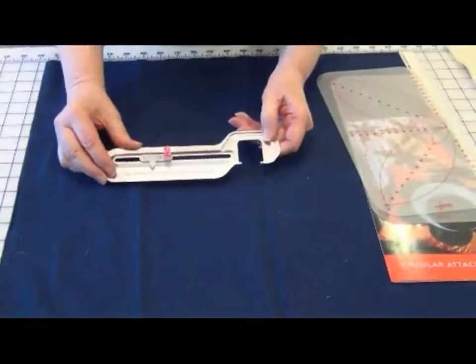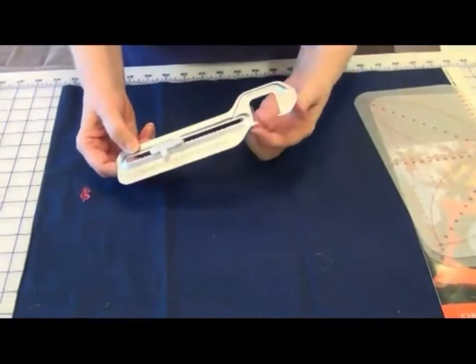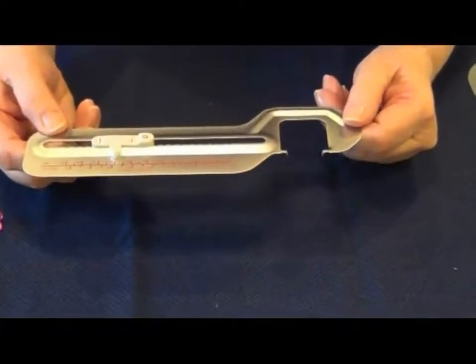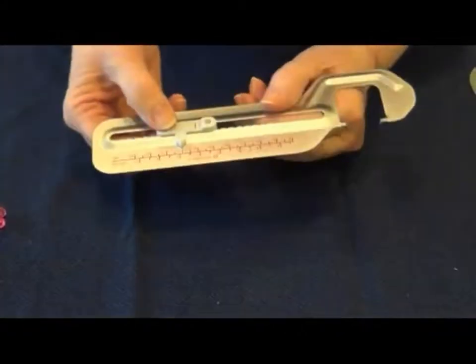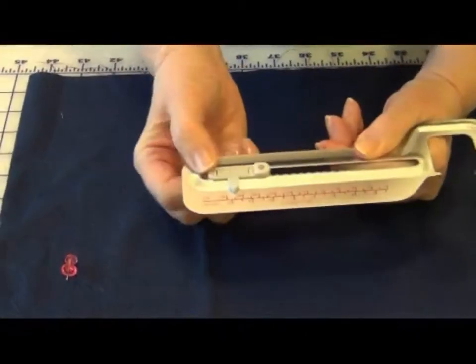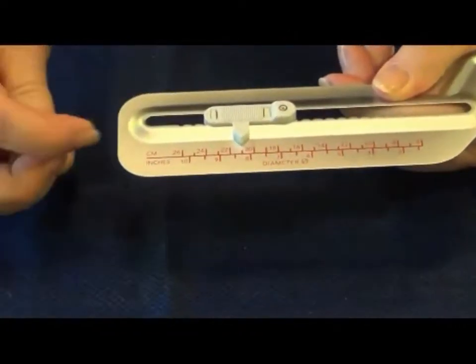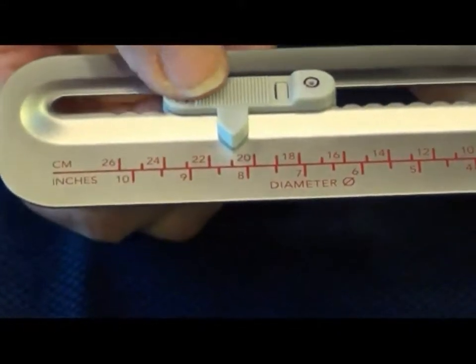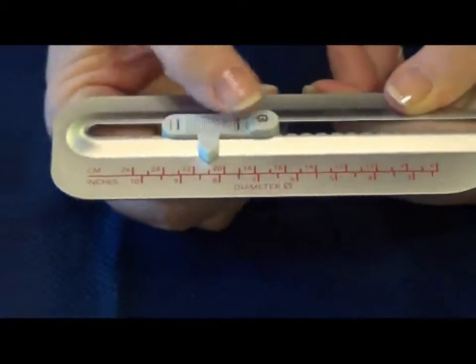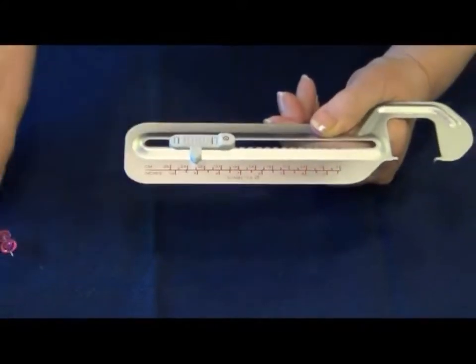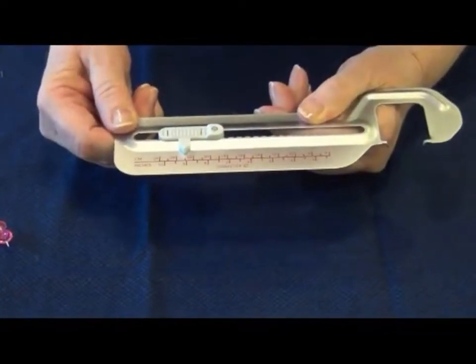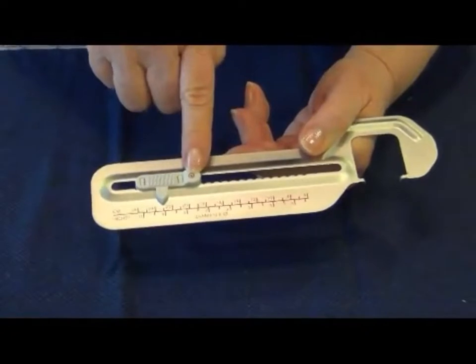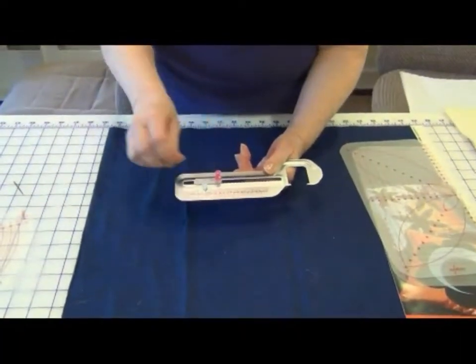All right. So how does this circular attachment work? Well, first of all, it's got these two notches that come down here and as we'll see in a minute, they snap right into the holes in the stitch plate cover of your machine. This size guide moves up and down and you have the size of the circles, the diameter of the circles in both centimeters and inches. And you will move the size guide until you reach the size of the circle you want. For example, if you wanted a nine inch circle, you would stop it here. And then for you want the center of your circle to be, you're going to line that up with this hole in the size guide and then push this pin into the fabric.